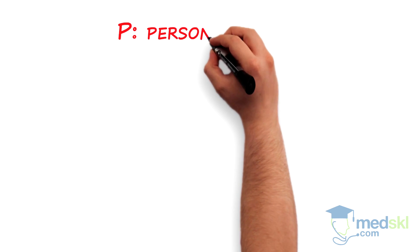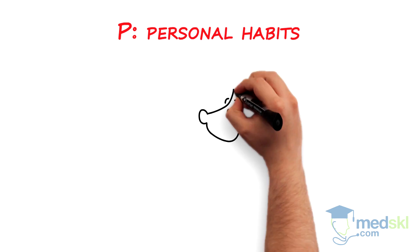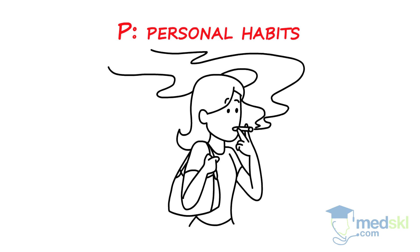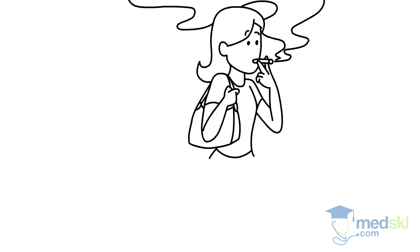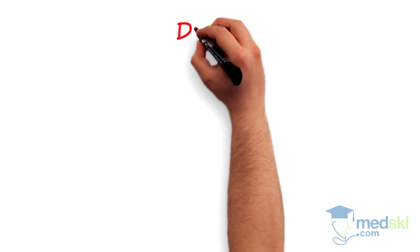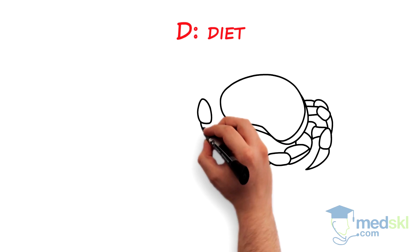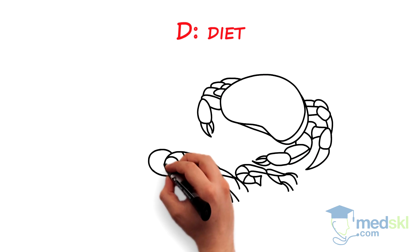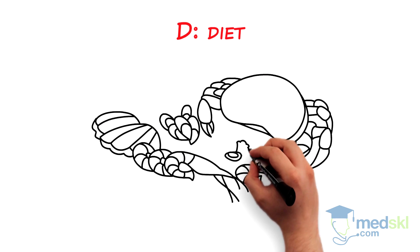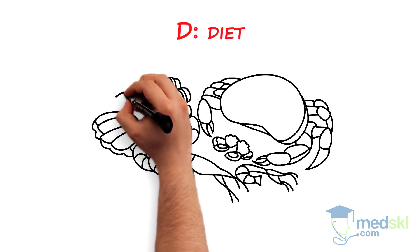P — personal habits. Is she smoking? D — diet. Is this an allergic reaction to food, for example, nuts or shellfish?